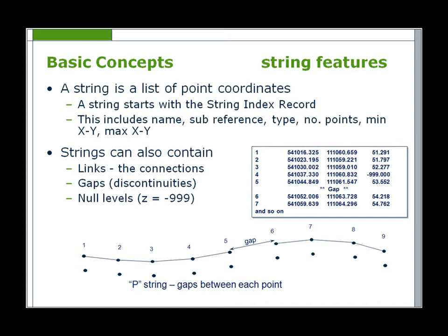Point feature strings always start with an initial character P, and these strings have no links between points. Examples of point features would be gullies or lamp posts. Null levels — an elevation of minus 999 — indicate no level information, and this point would not be included in triangulation.